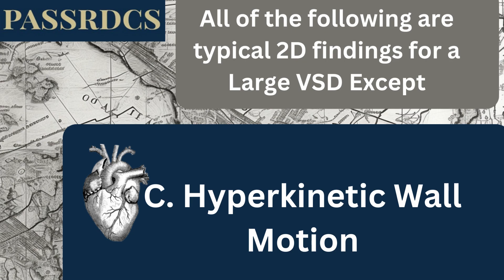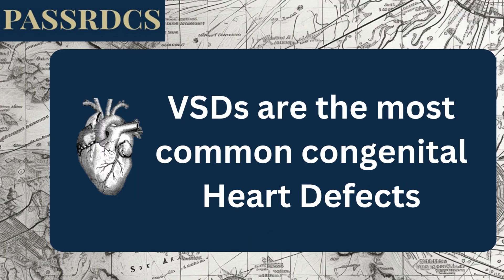Ventricular septal defect is the most common congenital heart defect, occupying about 25% of all congenital defects. The shunt flow should be left to right. Symptoms depend on the size of the hole, which is compared to the aortic annulus. Greater than 50% of the aortic annulus size is large; 25–50% is medium; less than 25% is small. Large holes often result in pulmonary edema, and VSD is usually an isolated defect.